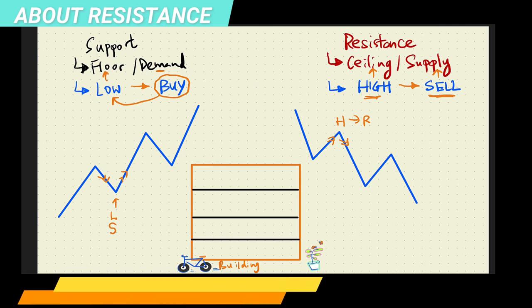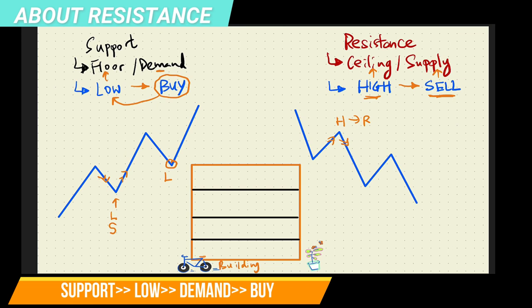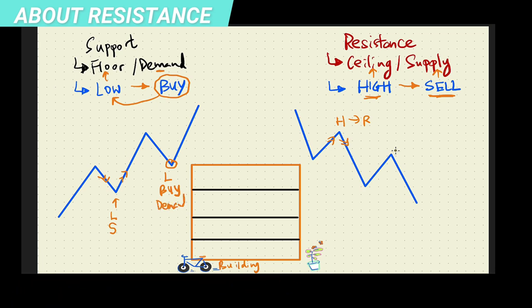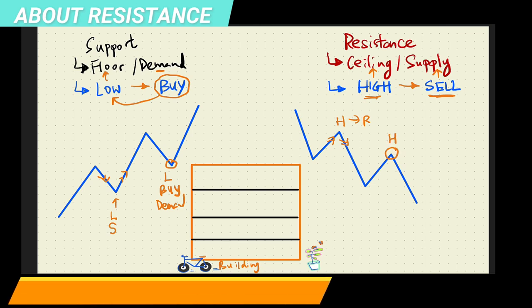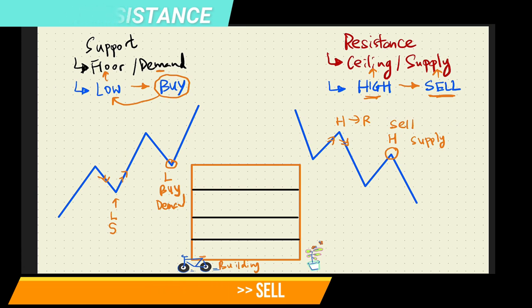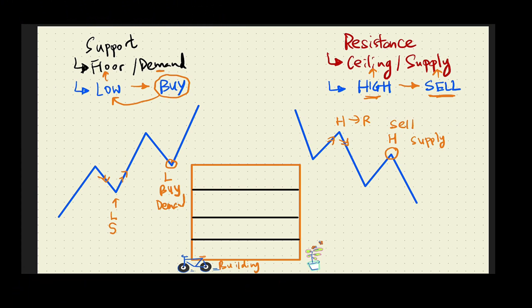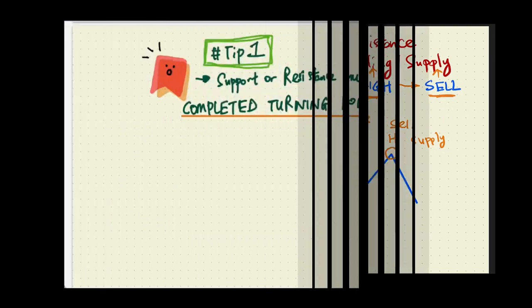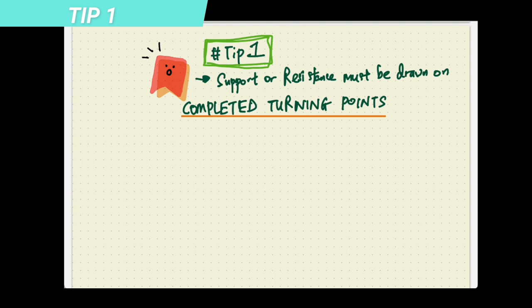Very likely, support would be areas where it is a low — you associate support with buying activity and support is likely to be a zone of demand. Resistance is likely to be a high, where there's selling activity because it is a zone of supply. That's simply what is support and resistance when looking at prices, whether you are trading or investing. It is very important to take note of support and resistance because this is like the father of trading, the father of investing.